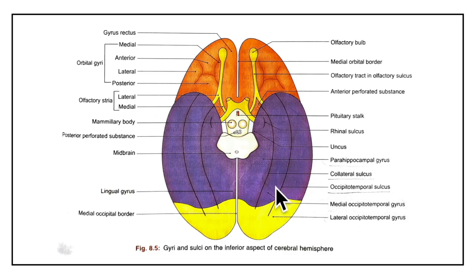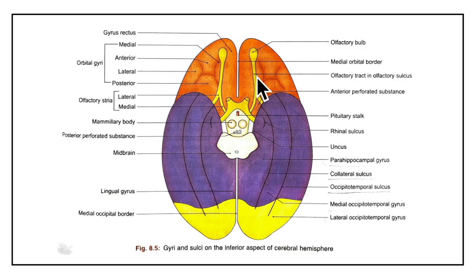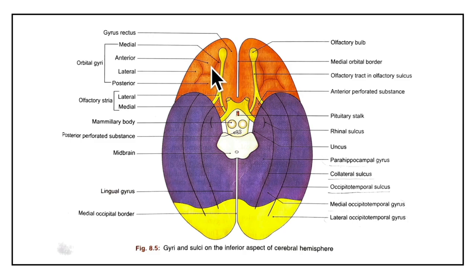Now let's look at the sulci and gyri of the orbital surface in detail. The olfactory sulcus lies parallel to the medial orbital border; the olfactory tract lies in this sulcus. The gyrus rectus lies between the olfactory sulcus and the medial orbital border. The H-shaped sulcus divides the rest of the orbital surface into the anterior orbital gyrus, posterior orbital gyrus, medial orbital gyrus and lateral orbital gyrus. The stem of the lateral sulcus lies deep between the temporal pole and the orbital surface.